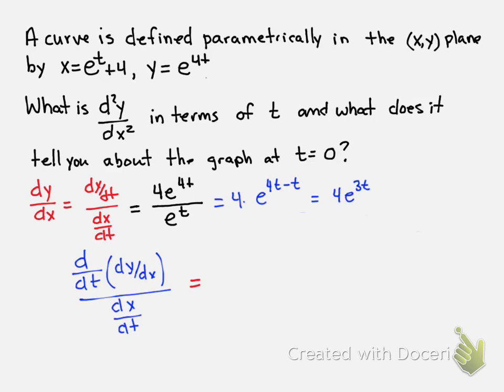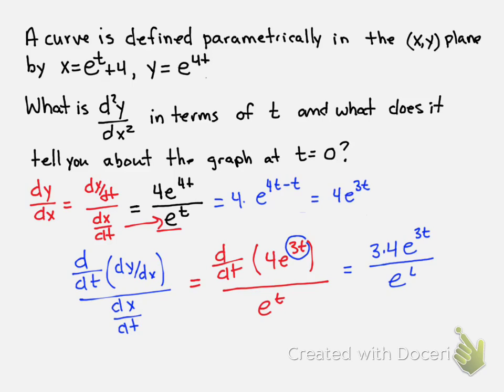So the derivative with respect to t of 4e^(3t), all over e^t. The chain rule here would multiply the derivative of the inner function, which is 3, times the original 4e^(3t), over e^t.